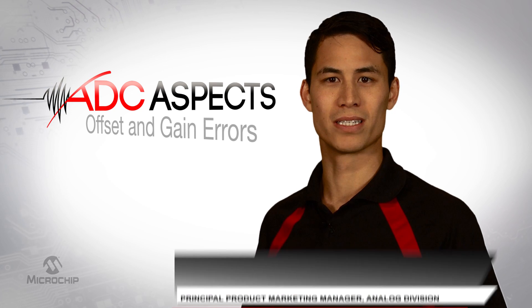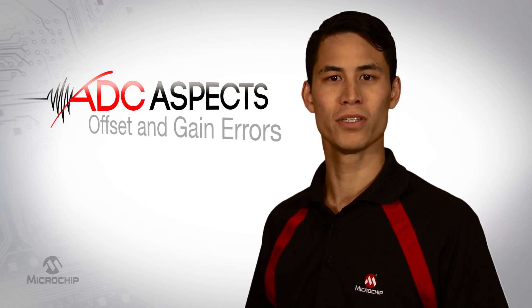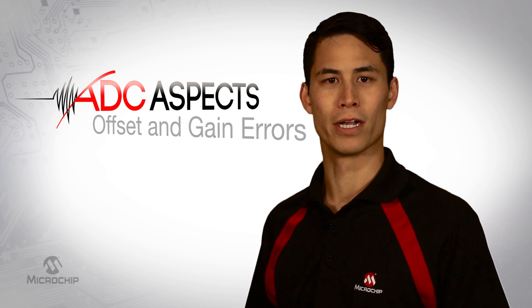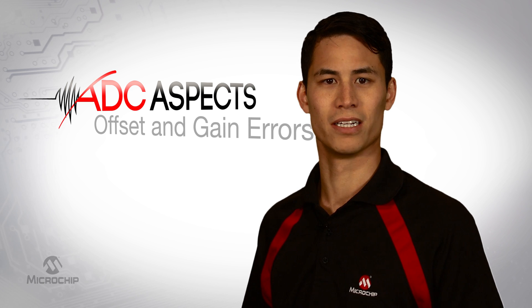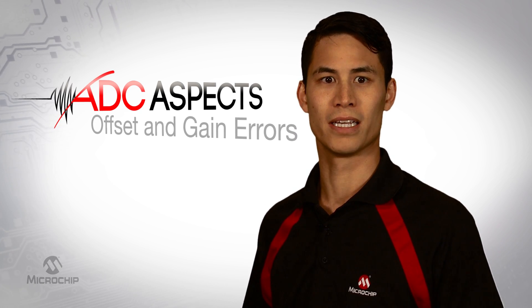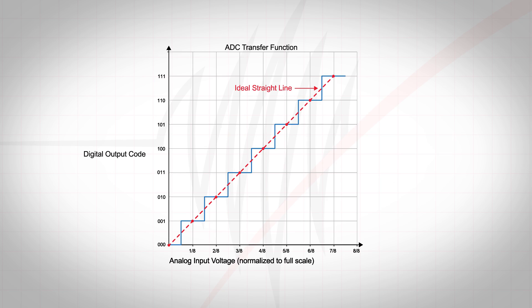In the previous video, we discussed INL and DNL. Two additional sources of static error, or error that affects the DC performance of a data converter, are offset error and gain error.